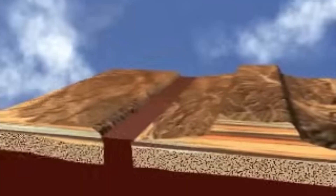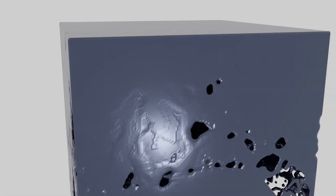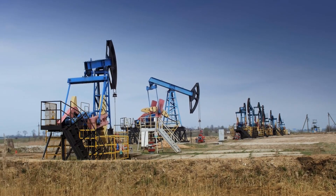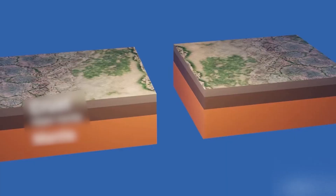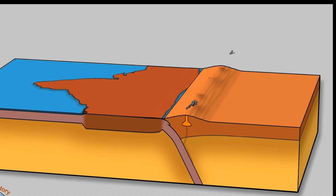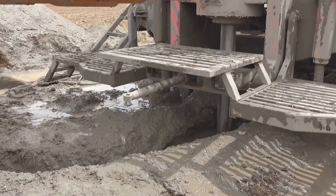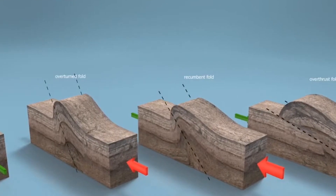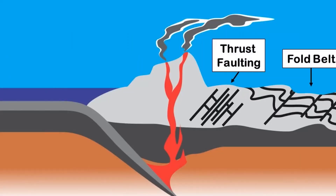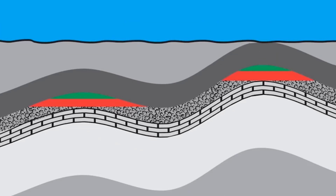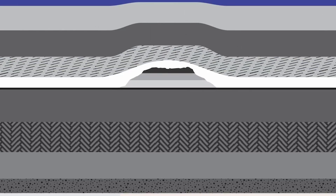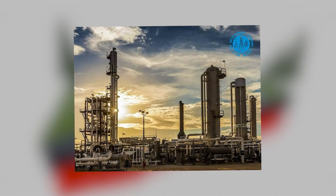Plate tectonics significantly influences the formation and distribution of oil and gas reserves. The movement of Earth's tectonic plates creates the geological environments necessary for hydrocarbon formation, such as sedimentary basins and traps. When tectonic plates collide or diverge, they create basins where organic material can accumulate and be buried by sediments. Over millions of years, these basins experience subsidence, increasing the heat and pressure needed for hydrocarbon formation. Tectonic processes can also expose or destroy hydrocarbon reserves — uplift and erosion can breach reservoirs, while excessive subsidence may degrade the hydrocarbons.